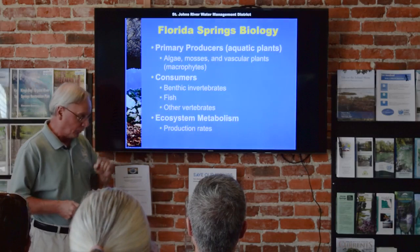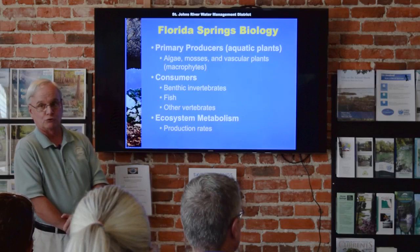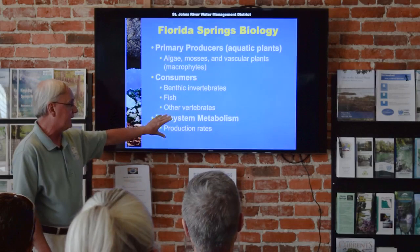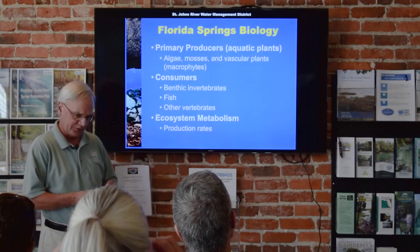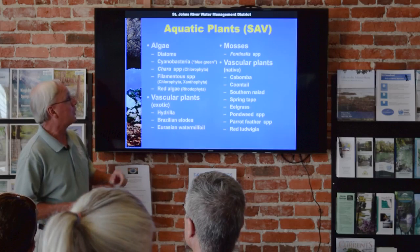When we talk about springs biology, these are the things we're going to go through: the primary producers, which are the aquatic plants — submerged and emergent — and then the various consumer groups, the benthic invertebrates, fish, and other vertebrates. We'll talk a little bit about ecosystem function and ecosystem metabolism, and then I'll try to put it all together in a way that ecologists view ecosystems, which H.T. Odom, the namesake of this institute, sort of helped pioneer.